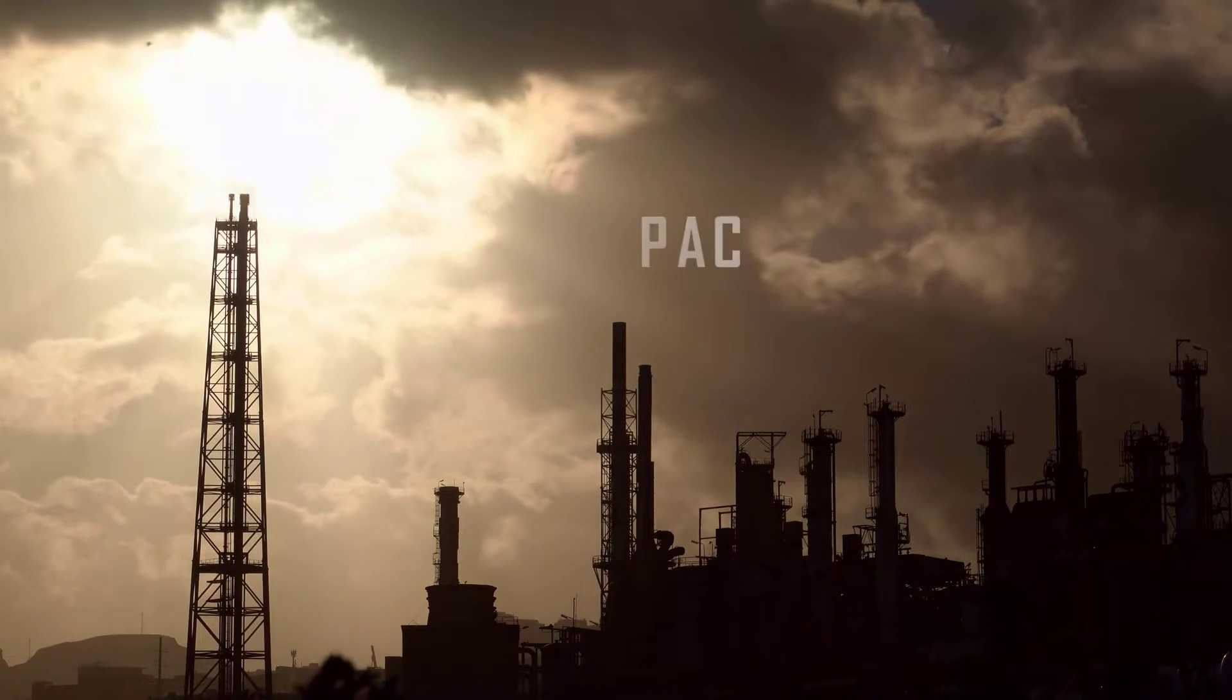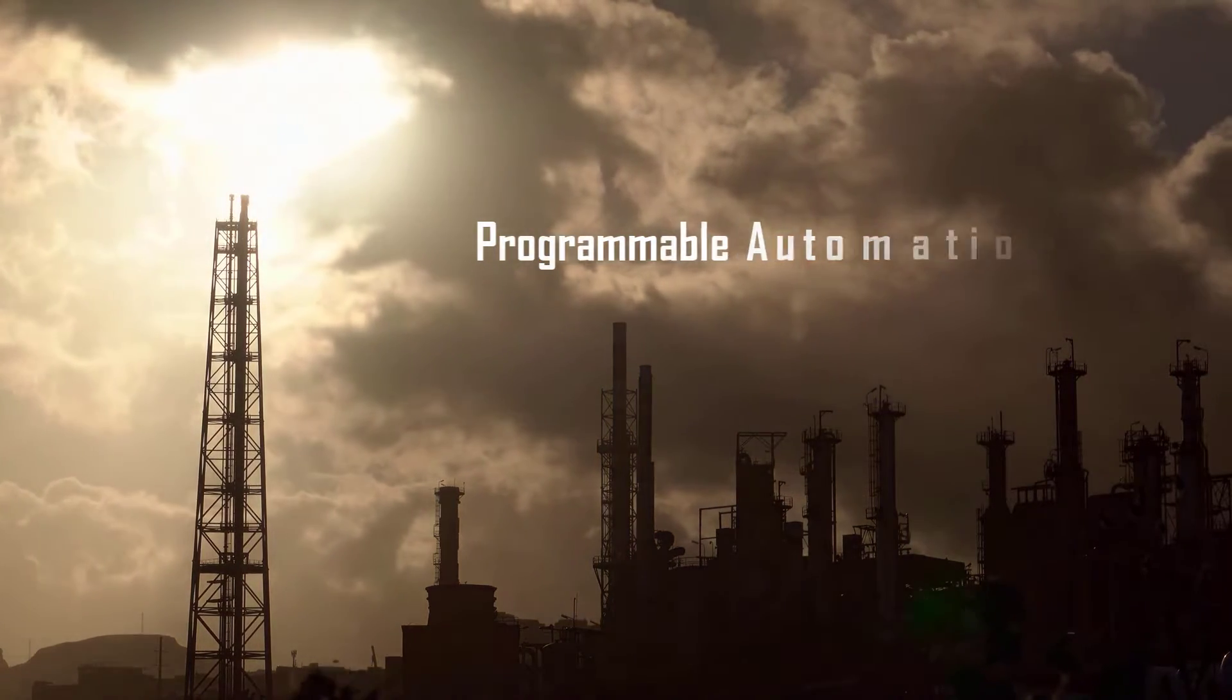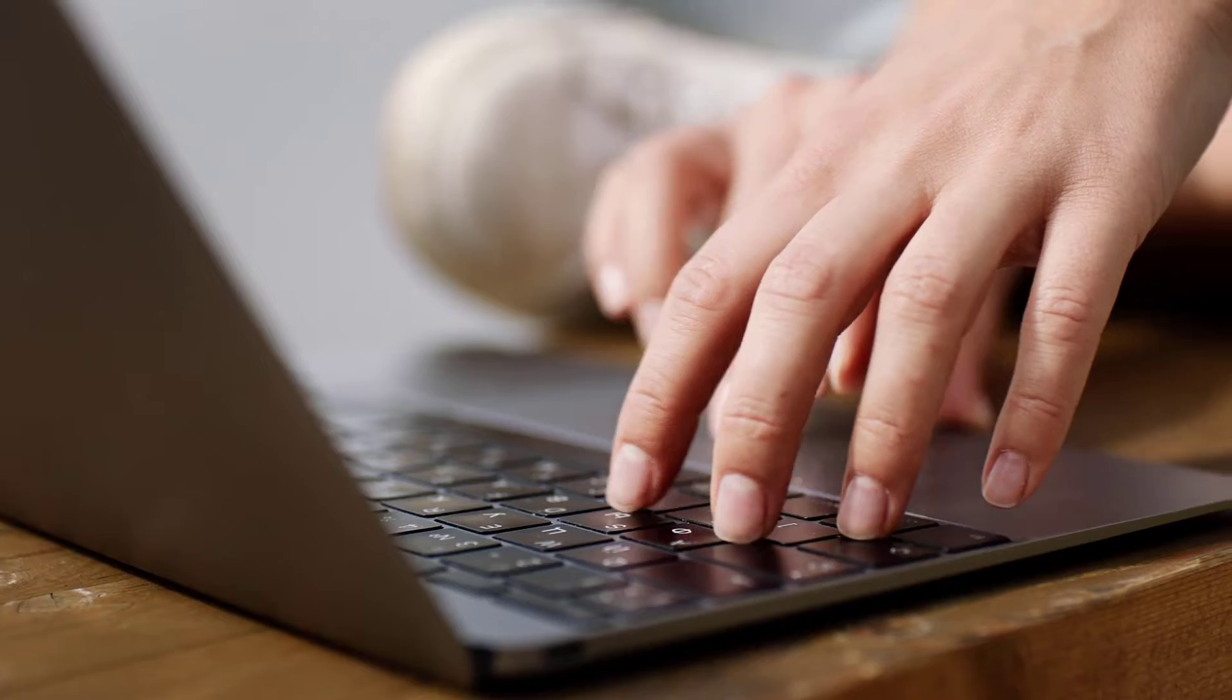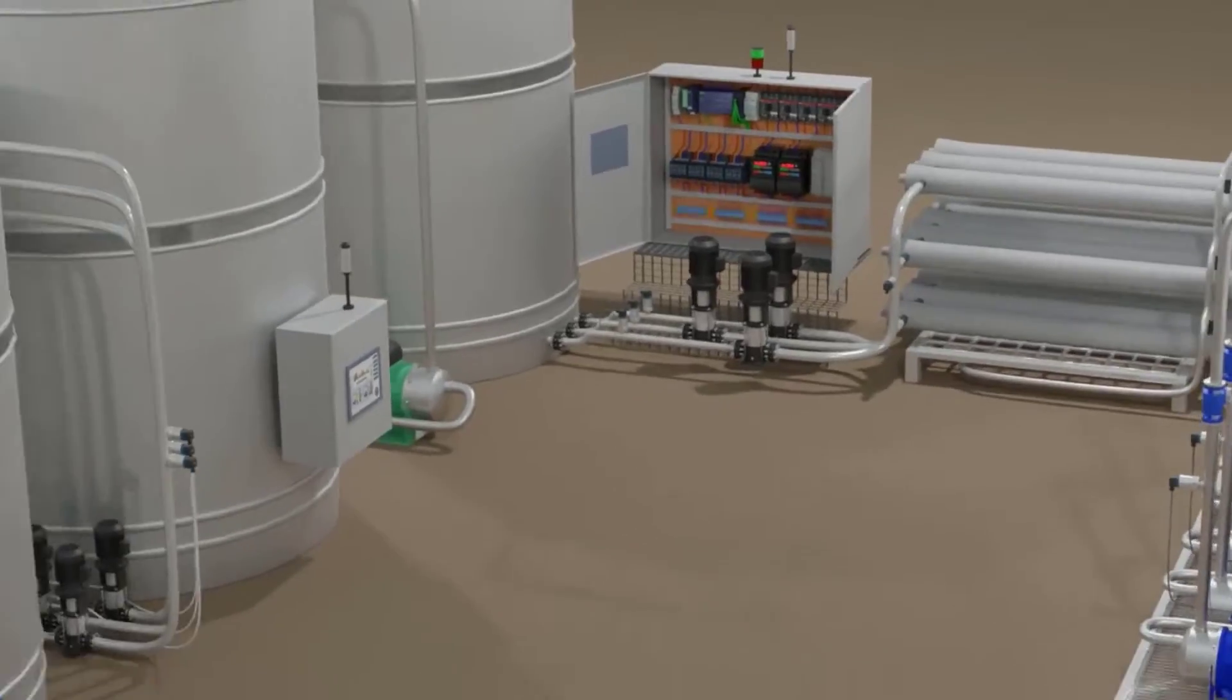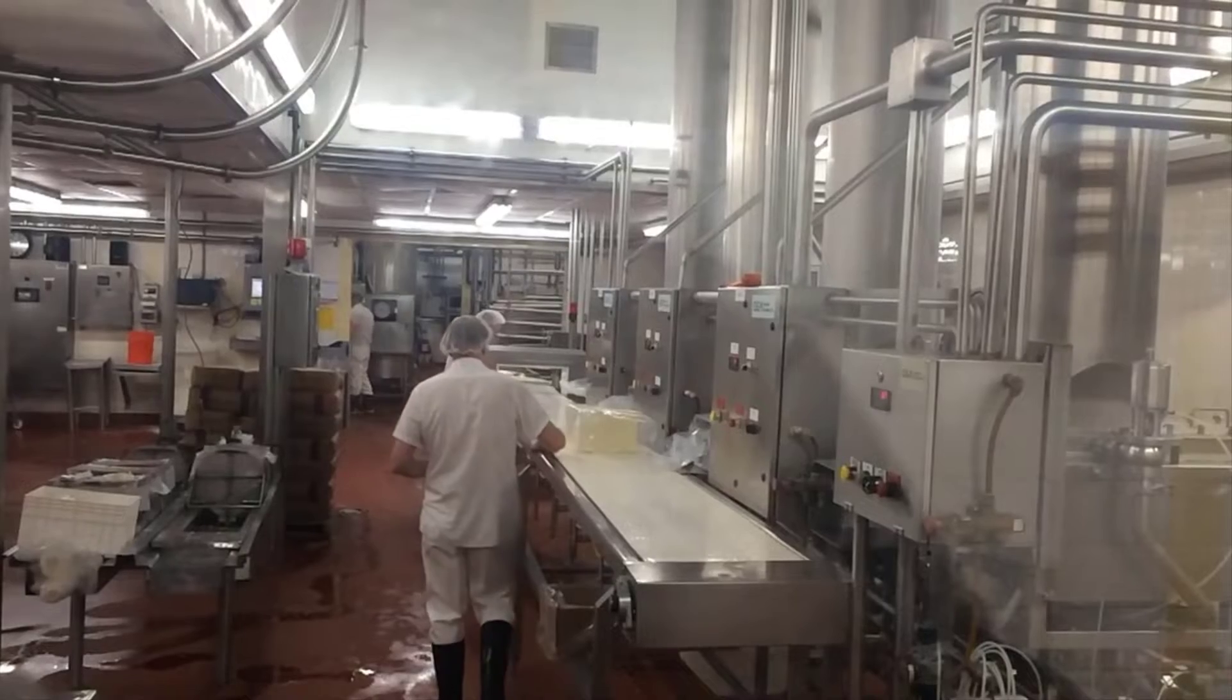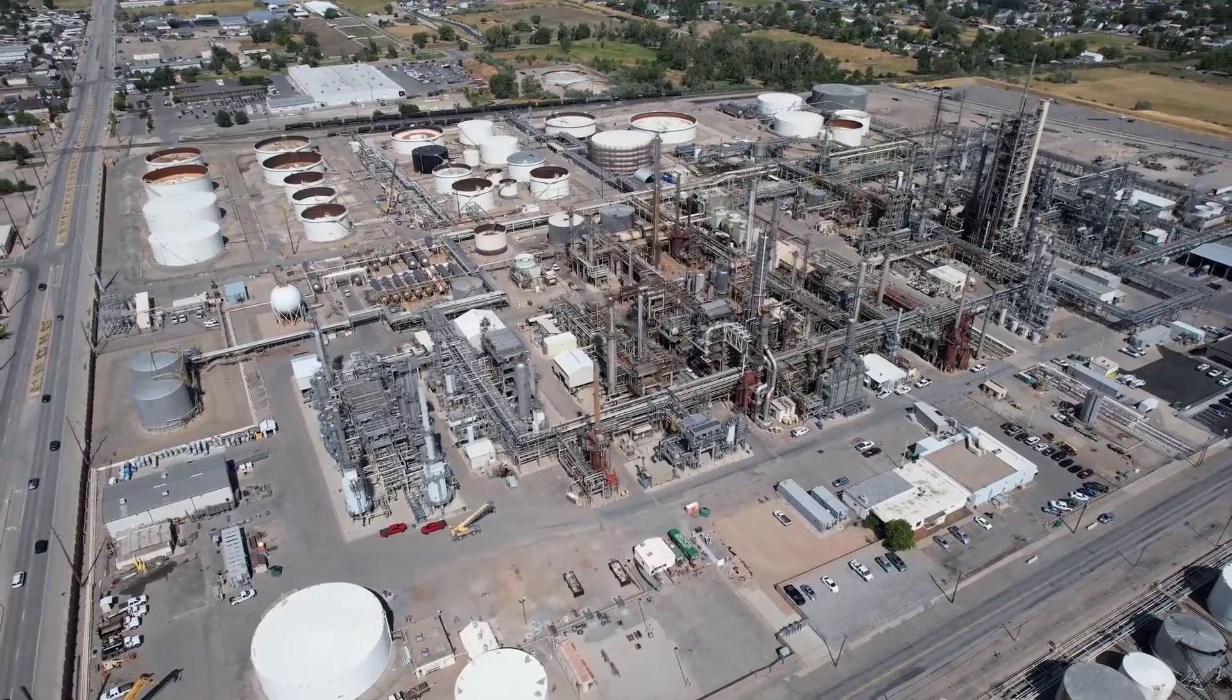Now let's talk about PAC, Programmable Automation Controller. PACs are a more advanced type of industrial controller that combines the features of PLCs and industrial PCs, IPCs. They are typically equipped with more processing power, memory, and communication capabilities than traditional PLCs. PACs often support multiple programming languages, including ladder logic, structured text, and sequential function charts, making them more versatile for complex control tasks.